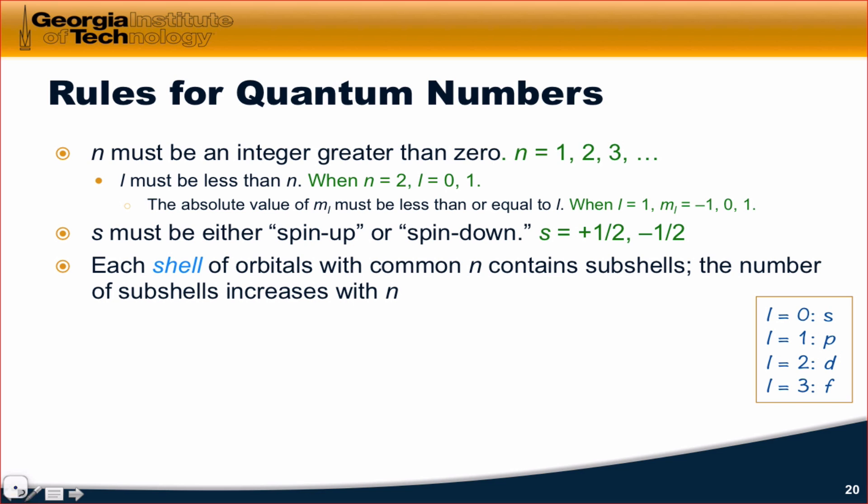One thing that's worth noting about the orbital quantum number l is that we usually don't represent it using numbers. For historical reasons, it's usually represented using letters. So, l equals 0 is s, l equals 1 is p, l equals 2 is d, and l equals 3 is f.